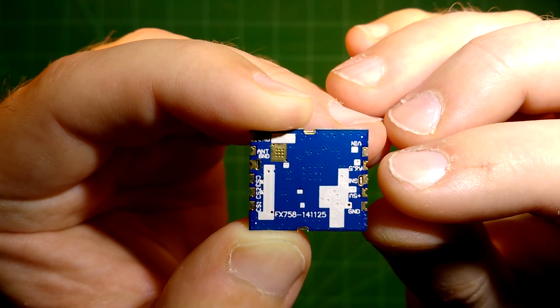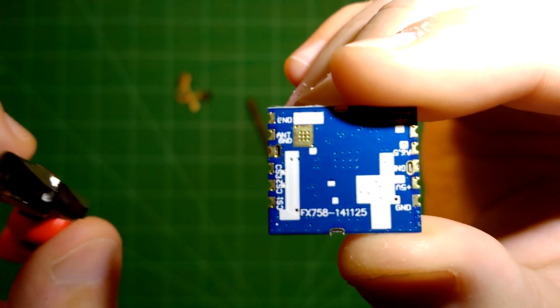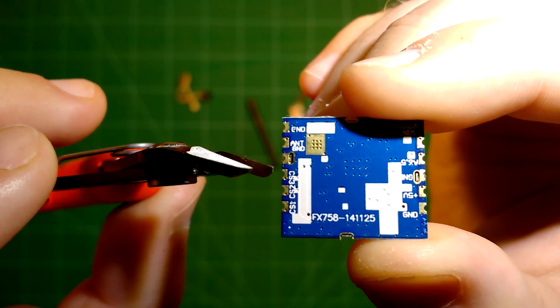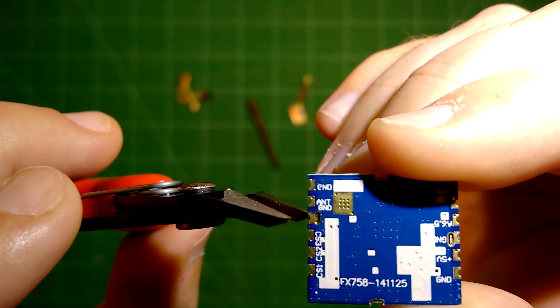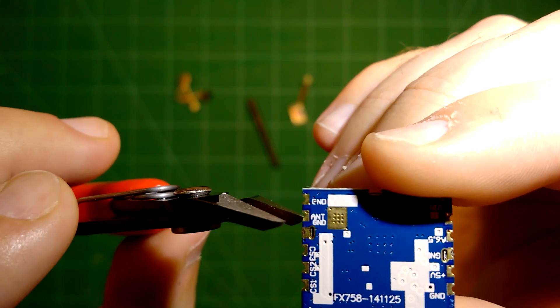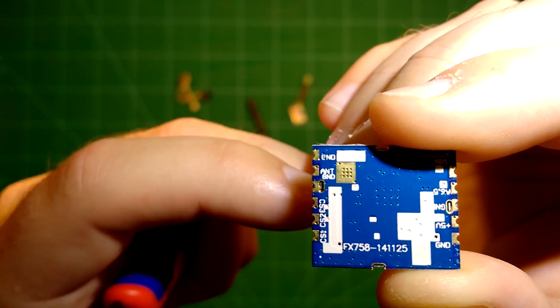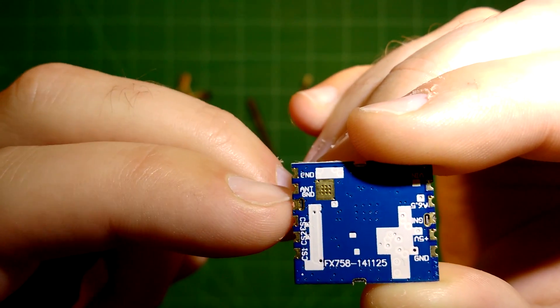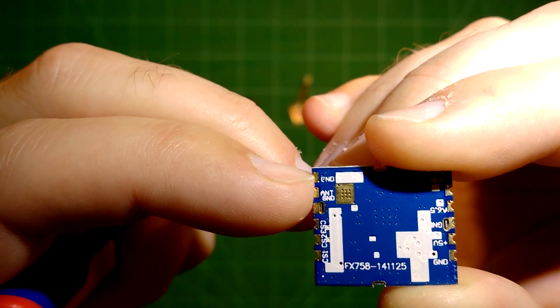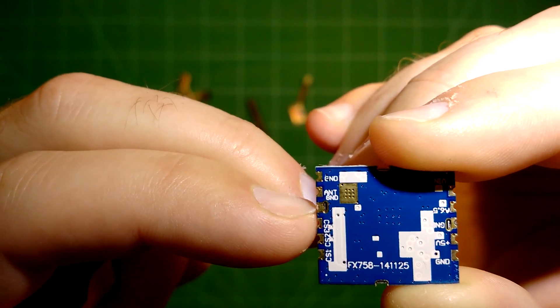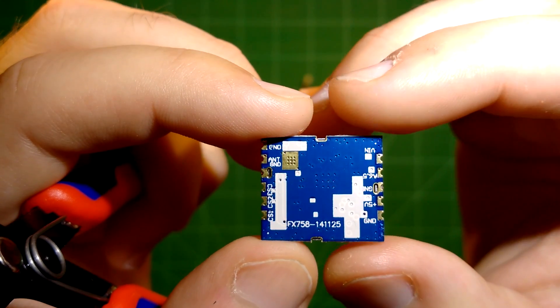You can also connect audio here but I did not try this so I don't know how this works. On the other side we have the antenna ground here and here, and the signal in the middle of course. So here you would connect your antenna and that's basically it.